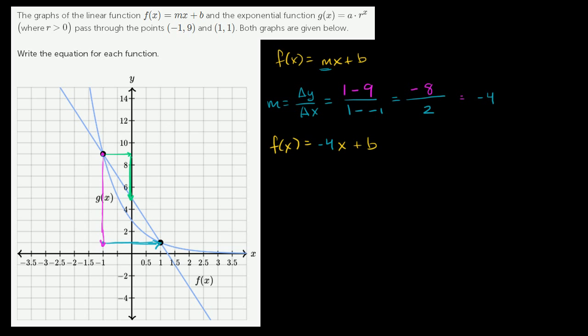Now let's think about what b is. To figure out b, we could use either one of these points. We know f(1), which would be -4 times 1 plus b, and they tell us that f(1) is equal to 1. So -4 plus b is equal to 1. We could add 4 to both sides and we get b is equal to 5.